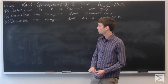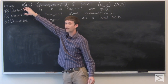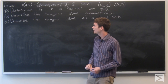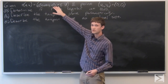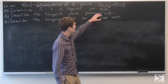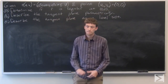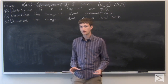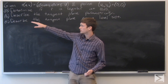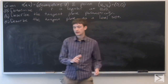In this problem, we're given the parameterization r of u, v equals e to the u cosine v, e to the u sine v, and u. We're given the point (u₀, v₀) = (0, 0). We want to determine if r is regular at (0, 0), and we want to describe the tangent set both parametrically and as a level set.